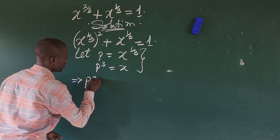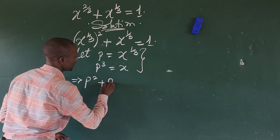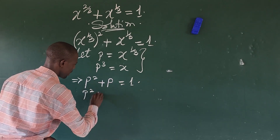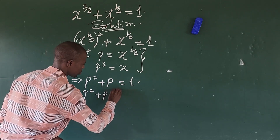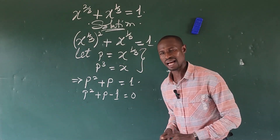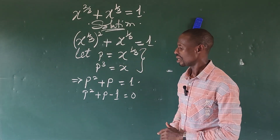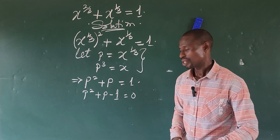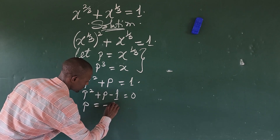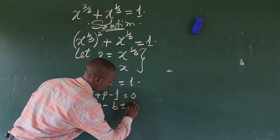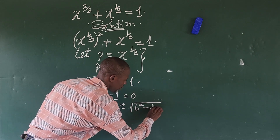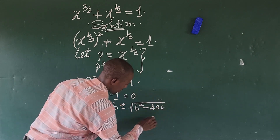Substituting p into the equation gives us p squared plus p equal to one. Moving one to this side, we have p squared plus p minus one equals zero. This is a quadratic equation. We'll solve it using the quadratic formula: p equals negative b plus or minus the square root of b squared minus four ac,